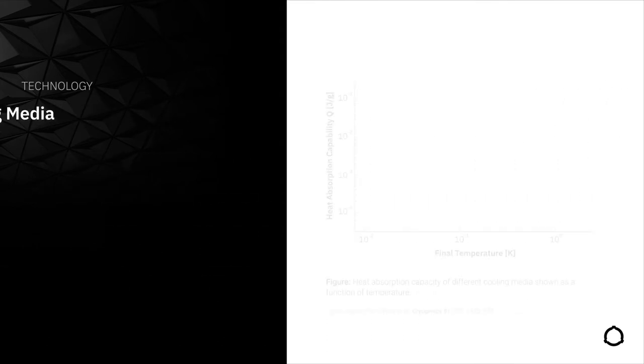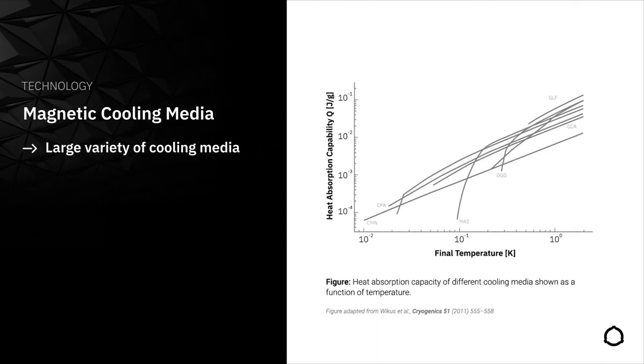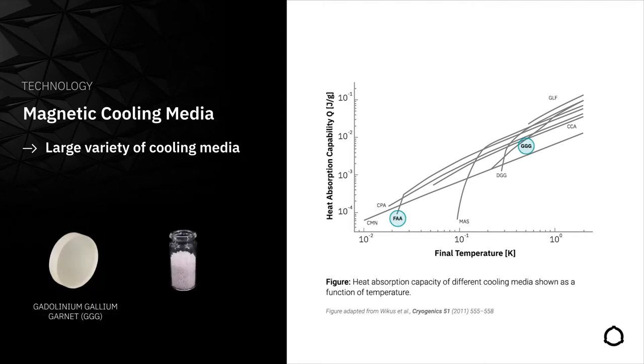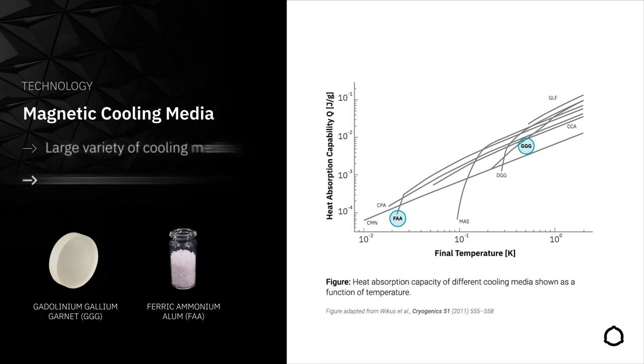A variety of materials can be used for magnetic refrigeration. As shown in this graph, some promise high cooling capacity, while others can go down to very low temperatures. The choice of the cooling material will therefore depend on the intended purpose and cooling requirements.